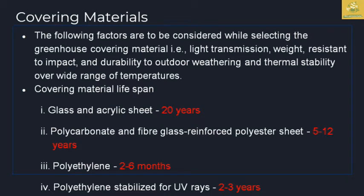When selecting greenhouse covering material, the following factors should be considered: light transmission, weight, resistance to impact, durability to outdoor weathering, and thermal stability over a wide range of temperatures. For example, glass and acrylic sheets last around 20 years, polycarbonate and fiberglass-reinforced polyester sheets have a lifetime of 5 to 12 years, plain polyethylene lasts 2 to 6 months, and UV-stabilized polyethylene lasts around 2 to 3 years.